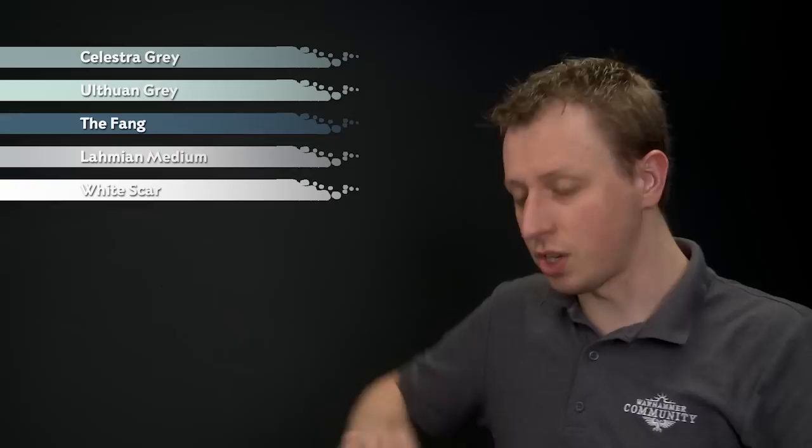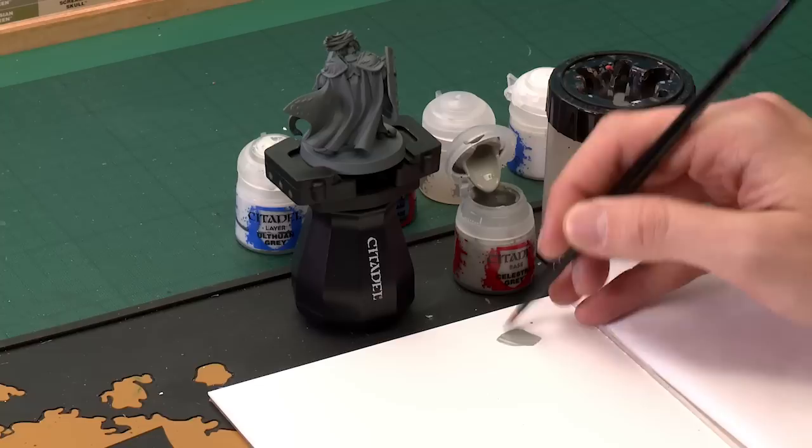But first of all we need to base coat the whole area, and for this we're going to be using Celestra Grey, which I'm going to apply with a large base brush, and as always use your palette here to get the paint ready. Getting a little bit on the palette layer like that, then adding a small amount of water into the mix, just to thin it down so it's nice and smooth, and once you've done so all you've got to do is base coat the whole area that you want to be white.